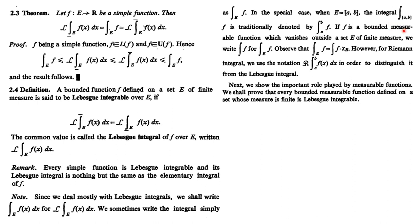A key notation: we define the integral of f over a set E as the Lebesgue integral. If f is a bounded measurable function that vanishes outside a set of finite measure, we write the integral of f over E as the integral of f times the characteristic function of E. This is the major difference between Riemann and Lebesgue: Riemann is defined over the interval [a,b] and Lebesgue is defined over a set E.